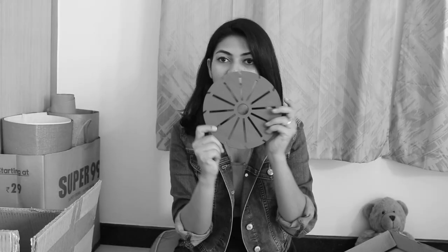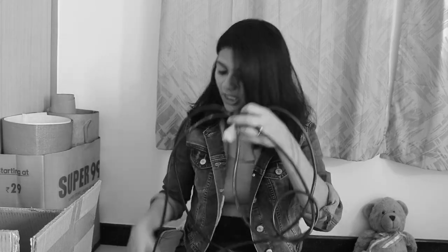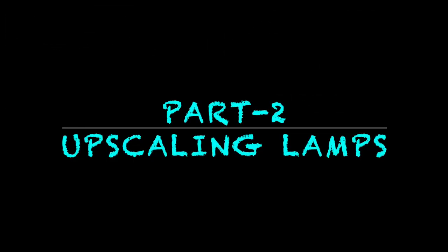I chose one hanging and one side table lamp. The last video was about upscaling the hanging ceiling lamp, and in this part 2 I will continue to show you how I upscale the side table lamp. So here we go.